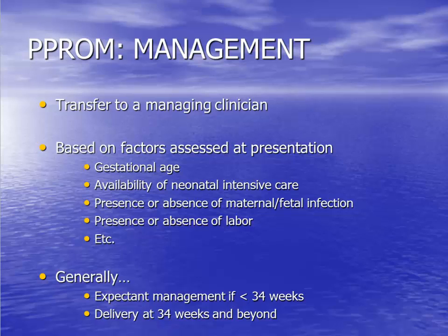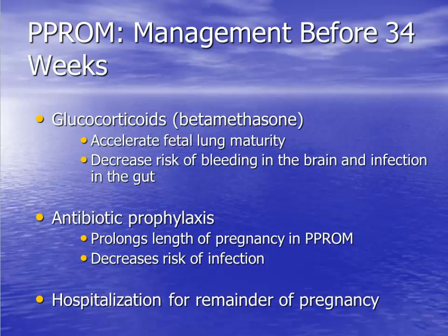If PPROM is diagnosed, management includes immediate transfer to a managing clinician. Generally, if the patient is not in labor and the fetus is stable, expectant management is indicated at less than 34 weeks of gestation. Delivery is indicated if the fetus is greater than or equal to 34 weeks. You should be familiar with the basics of PPROM management, which include betamethasone to decrease morbidity to the fetus, antibiotic prophylaxis for group B streptococcus and to prolong the pregnancy, and hospitalization for the remainder of the pregnancy.